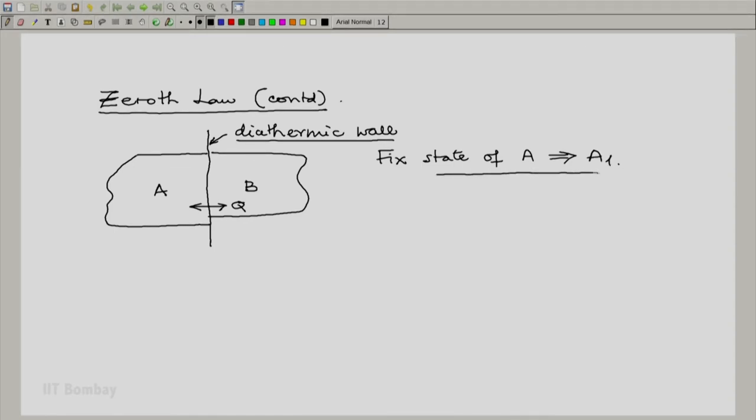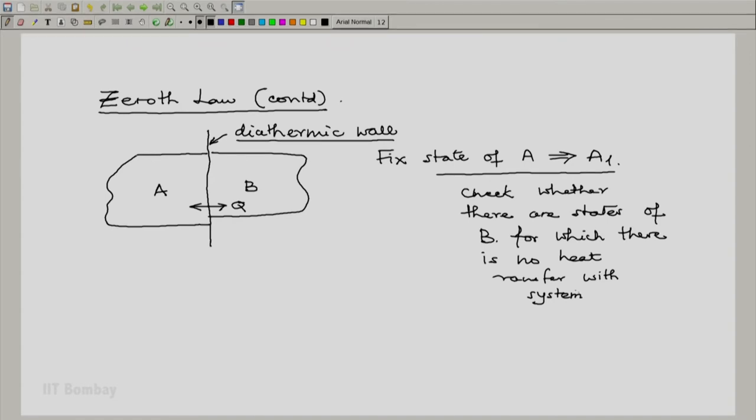And for this fixed state A1, what we do is check whether there are states of system B for which there is no heat transfer with system A in the state A1.